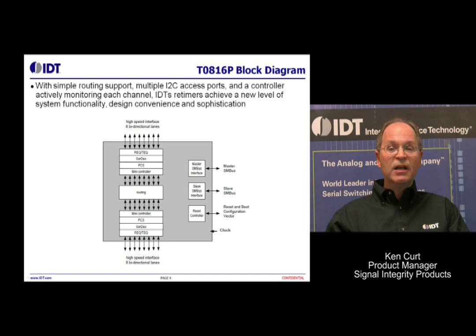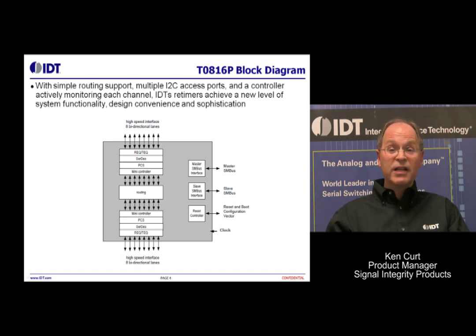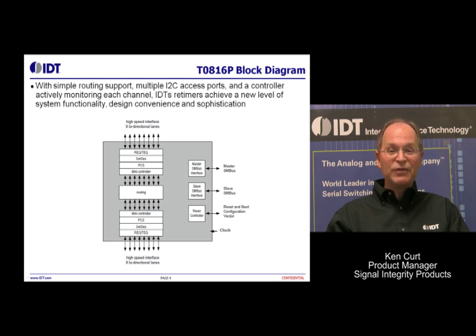Below that, you'll see the configuration vector, which is important to achieving the very low 10 to the minus 12 error rates that PCI Express Gen3 automatically negotiates to. There's also a JTAG interface. And immediately below that, you see the clock — a retimer device, of course, requires a reference clock input.